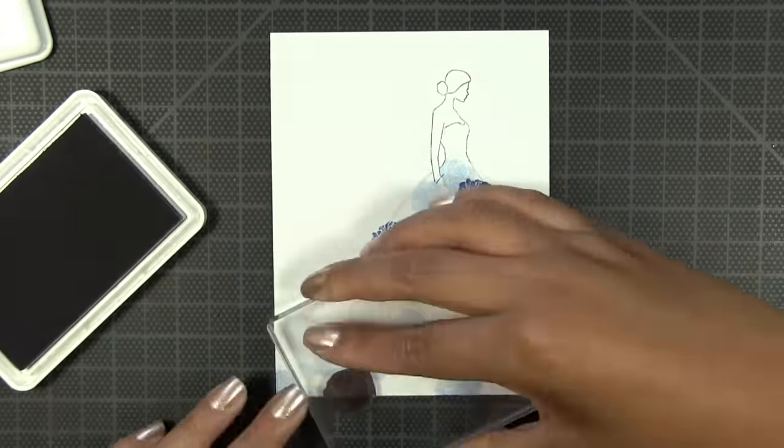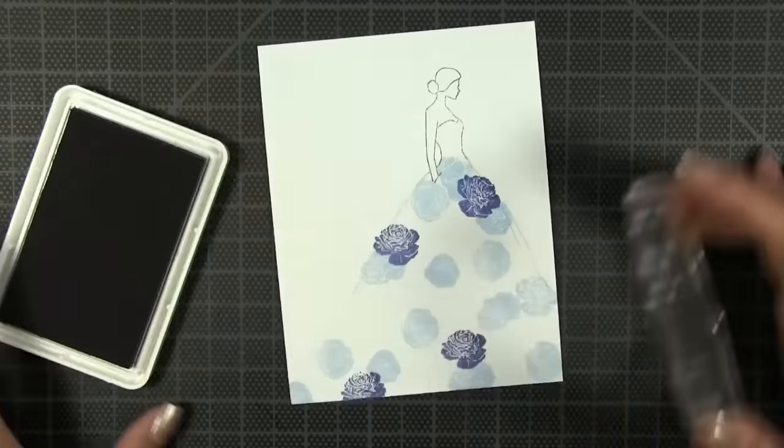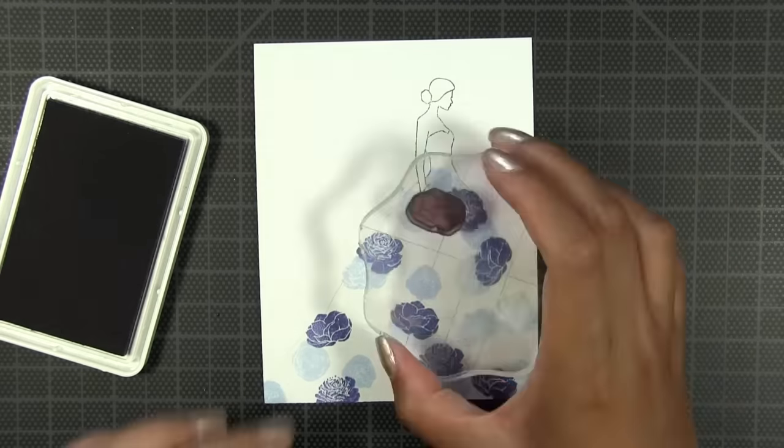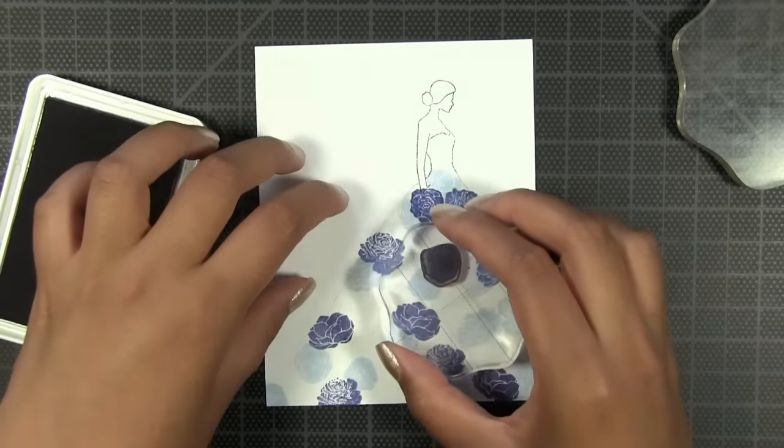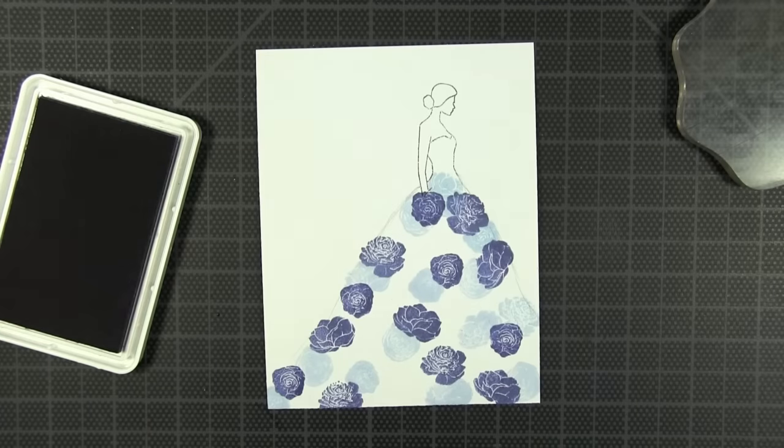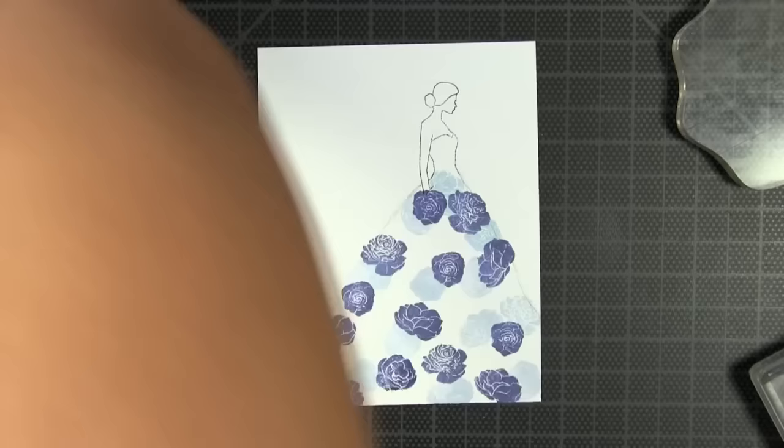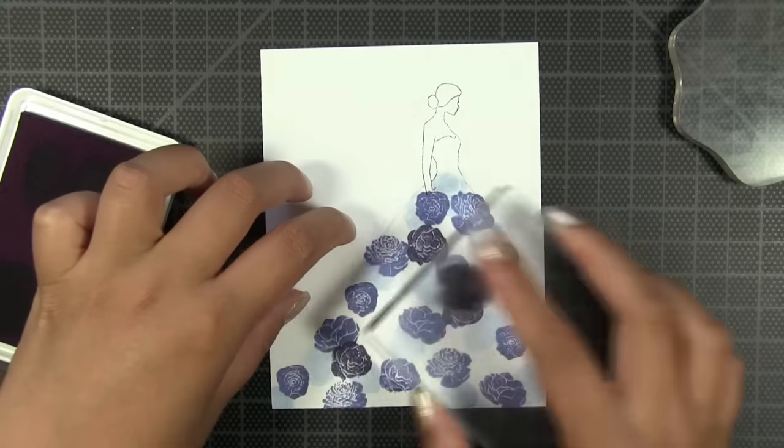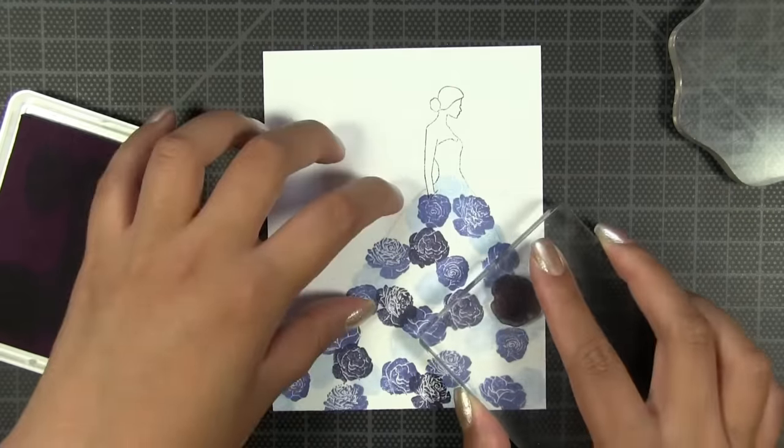Then I'm going to move on to stamp the rest of the florals in our Miami cool dye ink. Again, I'm not covering the entire skirt with just one ink. I want to make sure that there's a balance between the four dye inks that I'm using to stamp her skirt.